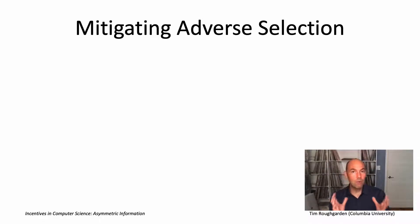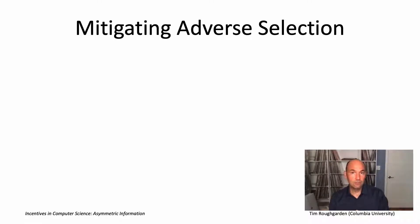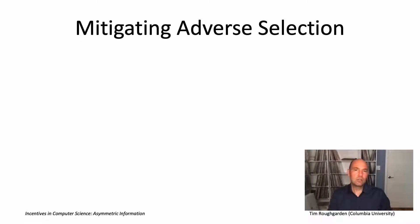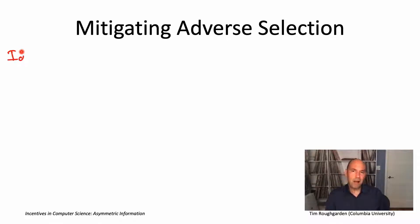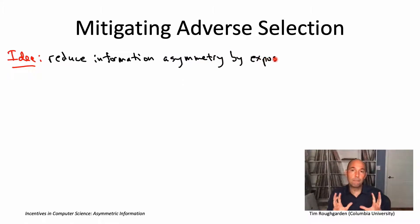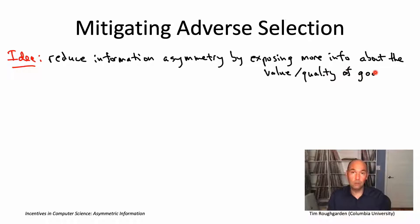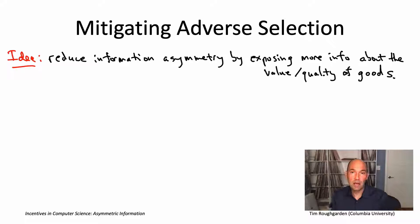So what can we do about it? What are some techniques for mitigating adverse selection? Well, if adverse selection is caused by asymmetric information, then a natural response would be to decrease the amount of information asymmetry by exposing more information about the quality of the goods being sold. So let's think about how that might work in the few examples that we discussed.